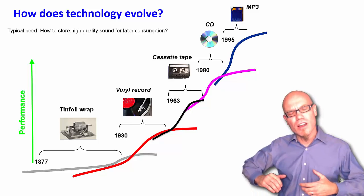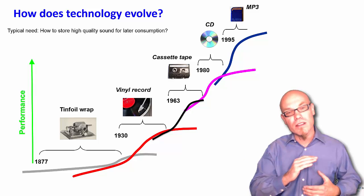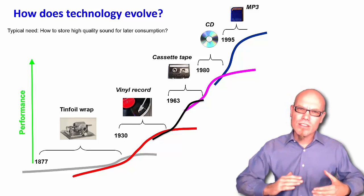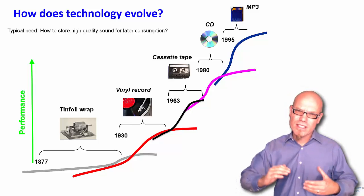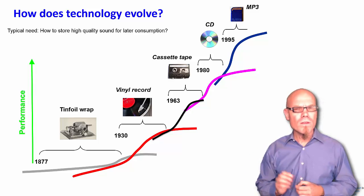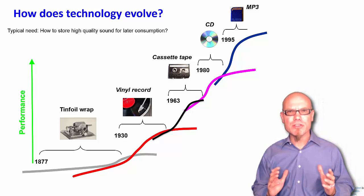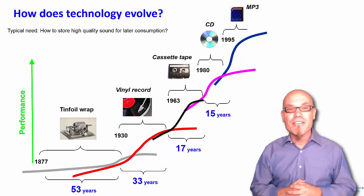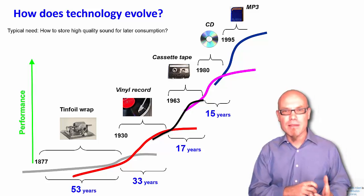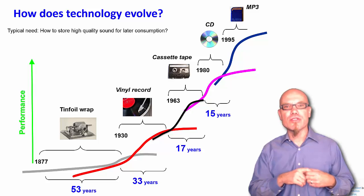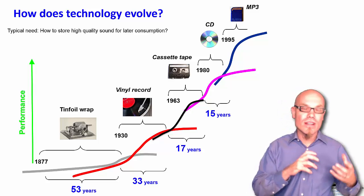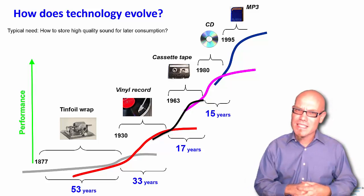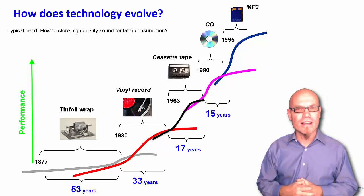We have these different curves of technologies where a new technology is born, a solution is born, then it dies off and gets replaced. So it's an evolution in discrete steps. One thing that is noticeable is that these steps always seem to become shorter. From the tinfoil wrap to the vinyl record, it took 53 years. From the vinyl record to the cassette tape, only 33 years. From the cassette tape to the CD, only 17 years. Then only 5. So things seem to become faster and faster. Innovation cycles seem to become shorter and change seems to accelerate.